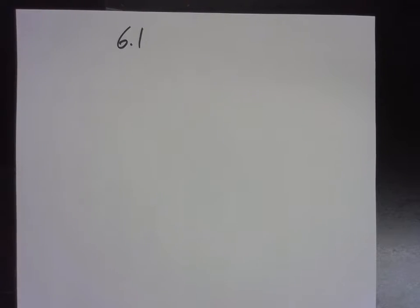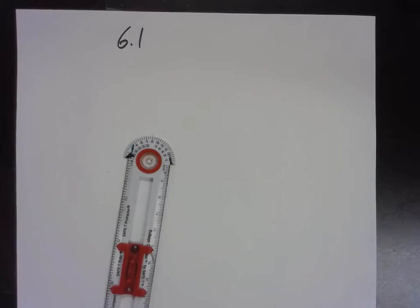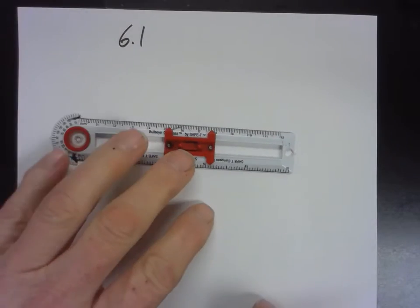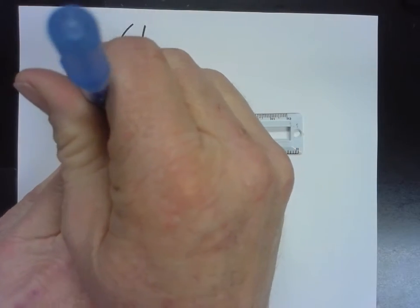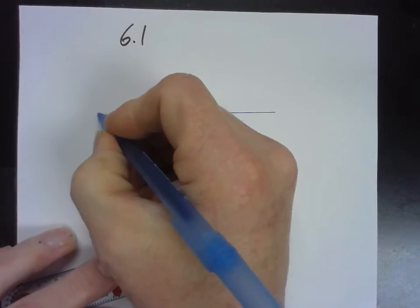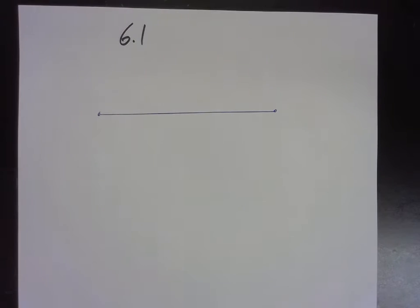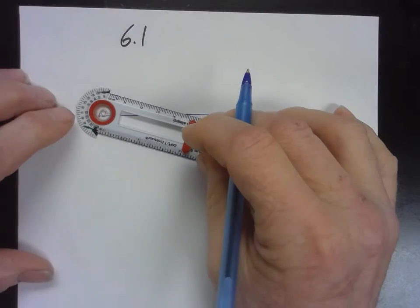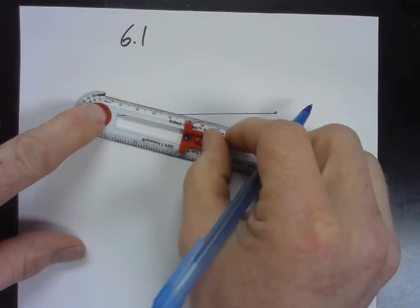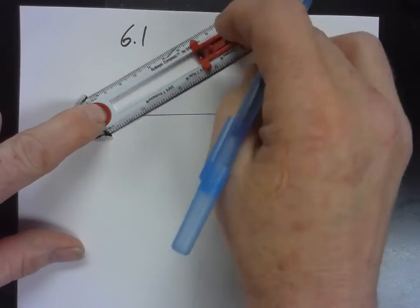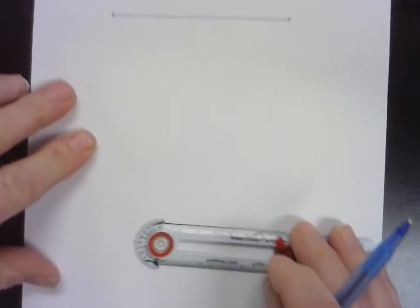Remember, it has to be a segment — it can't be a line. We can't bisect a line, can we? Not a line; we can bisect a segment but not a line. So if we just make our compass go more than halfway...